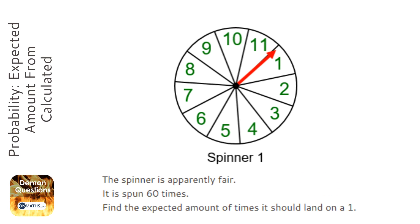Okay, so in this question we're not given what the probability of getting, it says a 1, on this spinner is. We've got to calculate it.